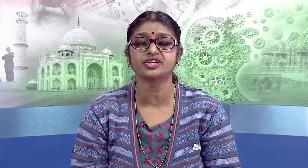Another form of large scale retailing is multiple shops. Multiple shops sell a similar range of commodities at the same price across all their shops, and are owned and run by big manufacturers. Multiple shops open a number of branches at different localities in a city or in different cities across a country, and this type of shop is also known as chain stores.